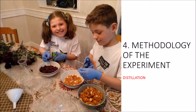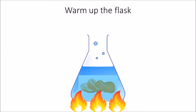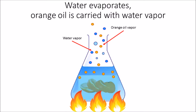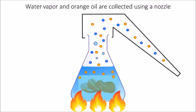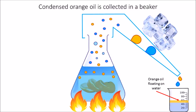Methodology of the experiment: distillation! To do distillation, first add orange peels to water. Then warm up the flask. Then water starts evaporating and orange oil is released. As water evaporates, orange oil is carried away with water vapor. Water vapor and orange oil can be collected by using a nozzle. When the nozzle is cooled, vapors condense. Orange oil and water separate. Condensed orange oil is collected in a beaker on top of water.